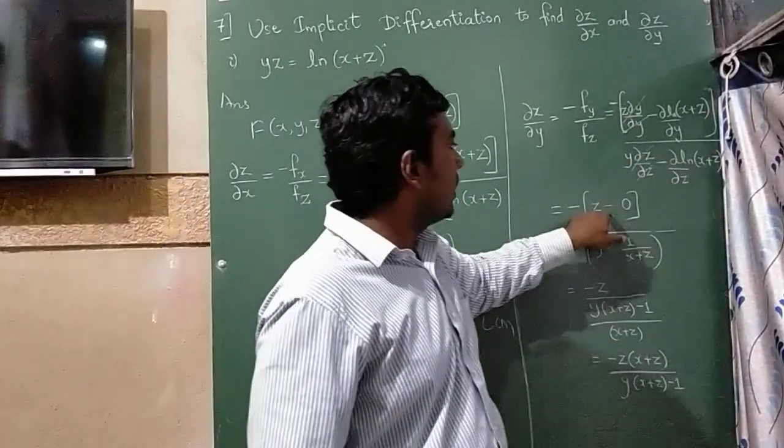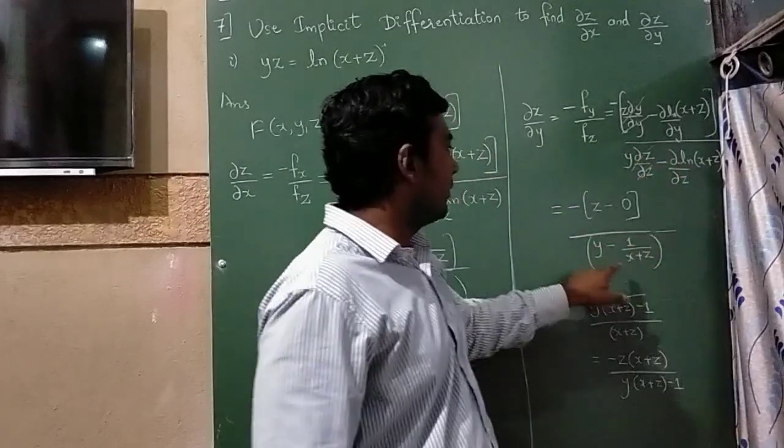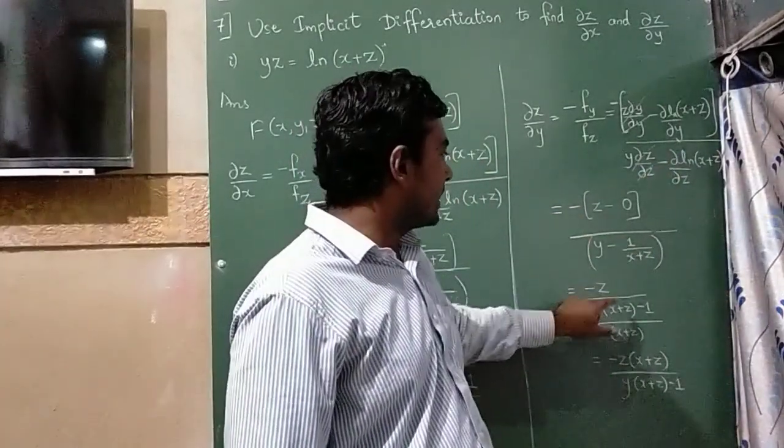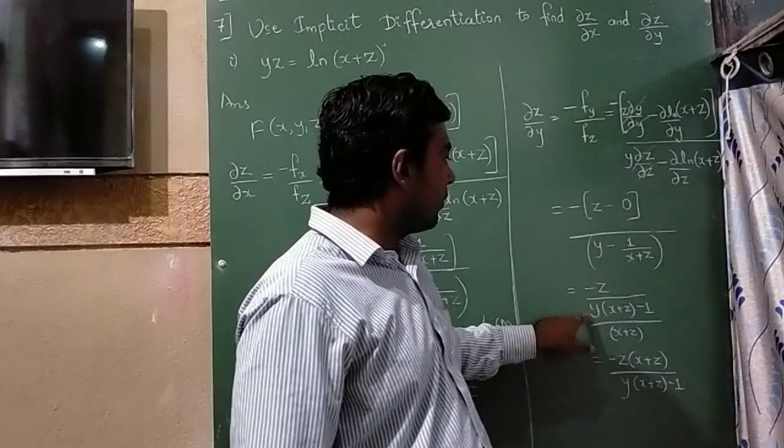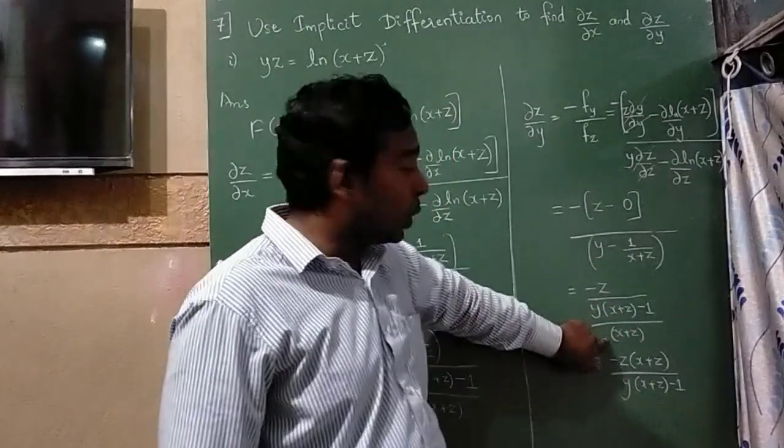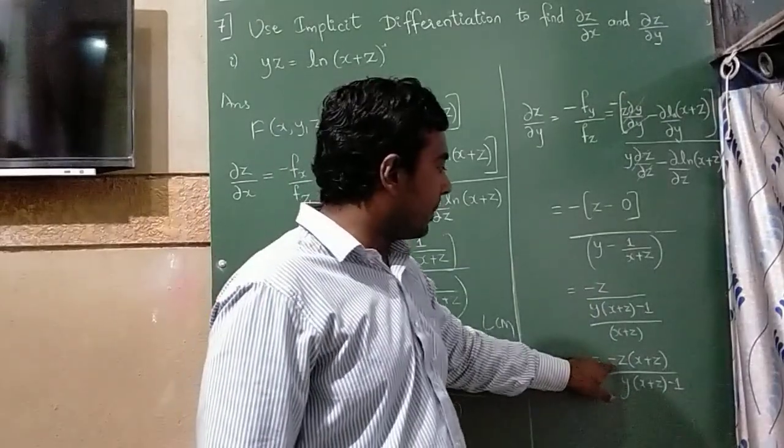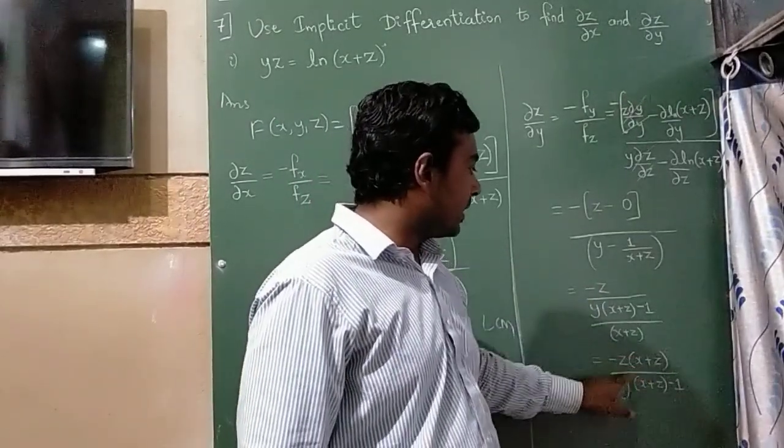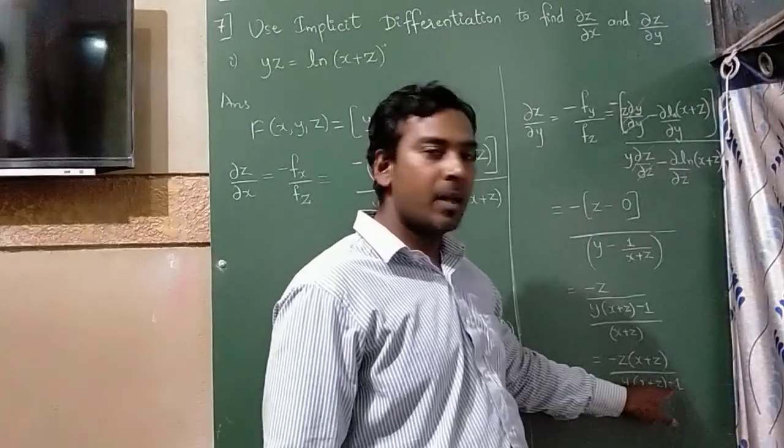I will get this much. And denominator part if I differentiate, I will get this much. So minus z and if you cross multiply y into x plus z minus 1 and the denominator part goes to the numerator and it will become minus z x plus z divided by y x plus z minus 1.